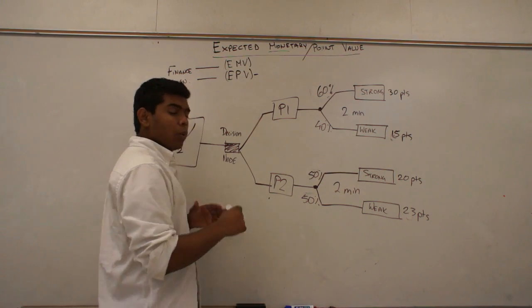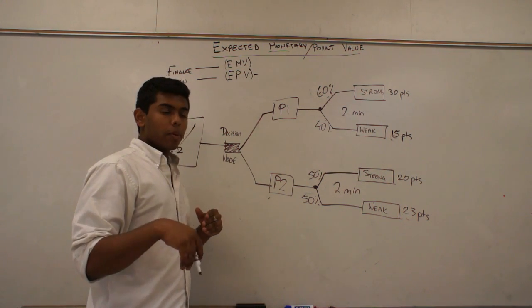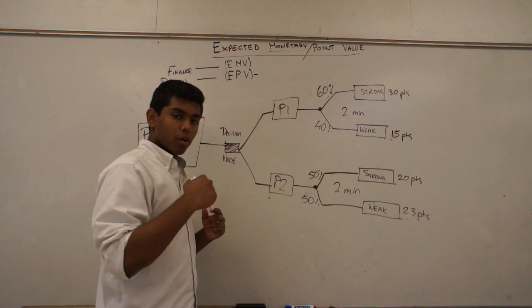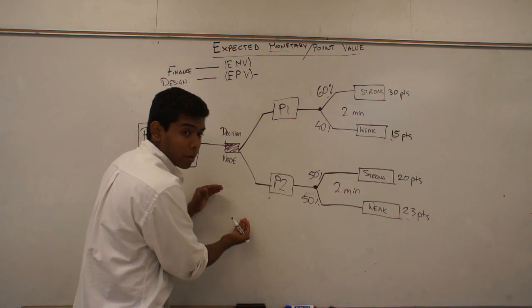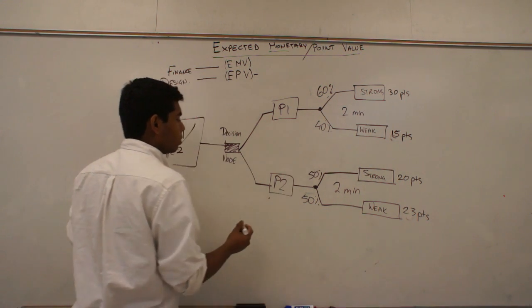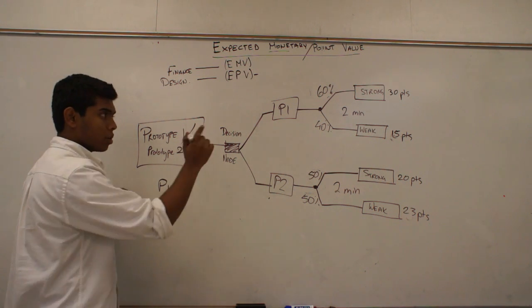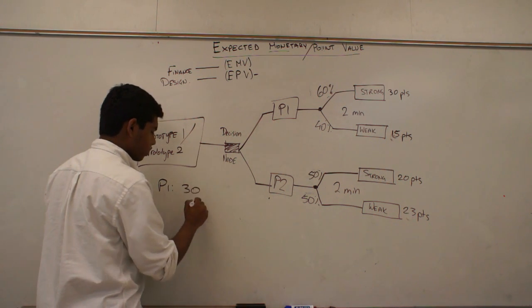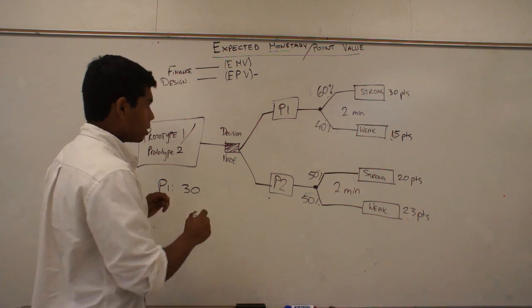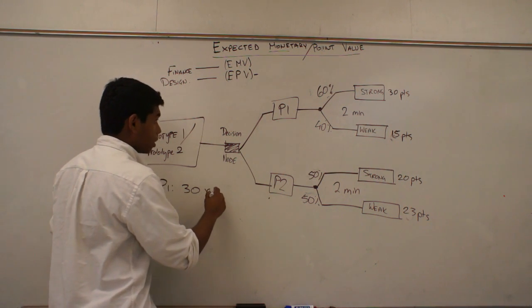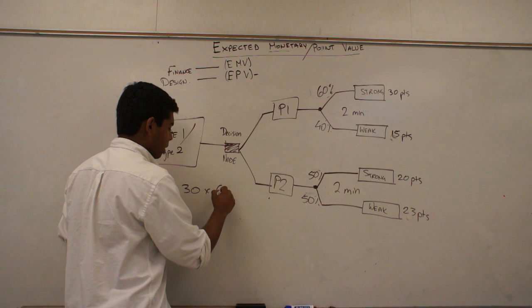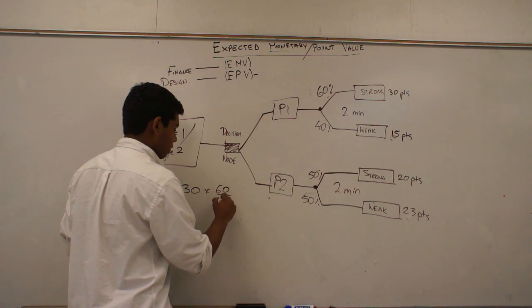So how do we calculate which prototype is best when we're comparing both of them side by side? Well, I look at prototype one, and I see that it can create 30 points. The chances of creating 30 points is 60%, so I would put that 60 over 100.